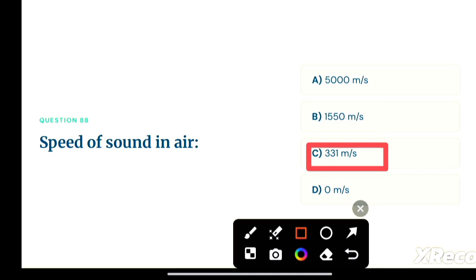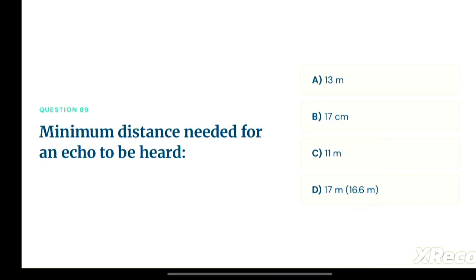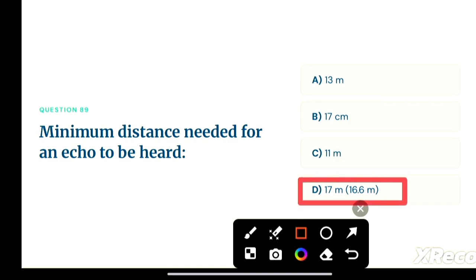Next question: minimum distance needed for an echo to be heard — option A: 13 meters, option B: 17 meters, option C: 11 meters, option D: 17 meters. The correct answer is option D, 17 meters (approximately 16.6 meters).